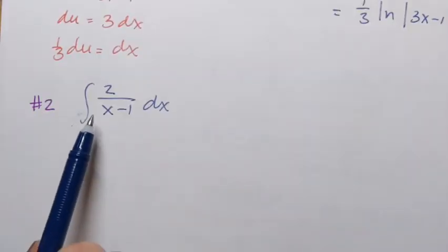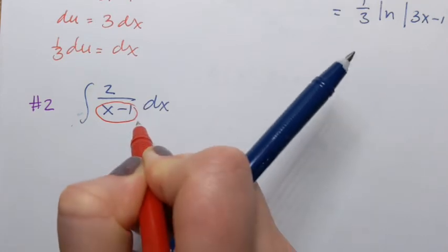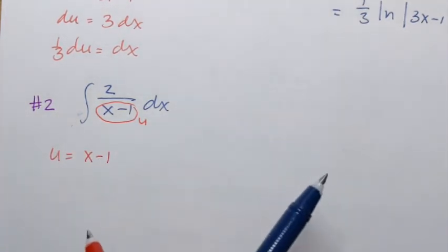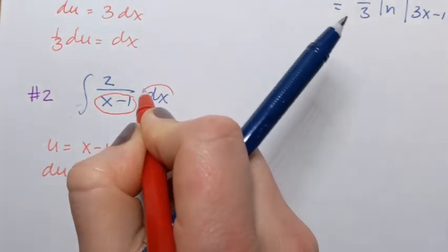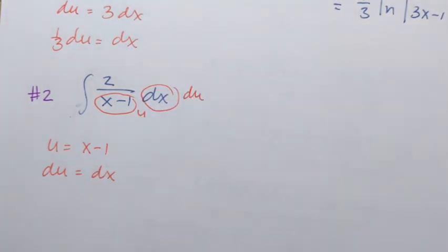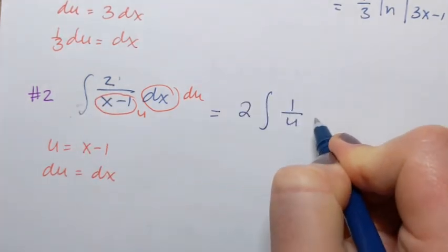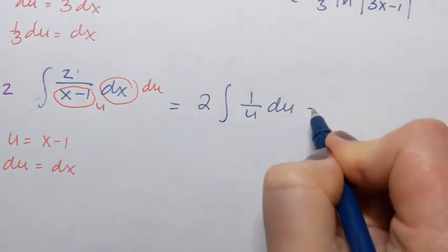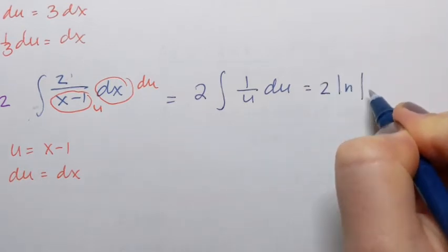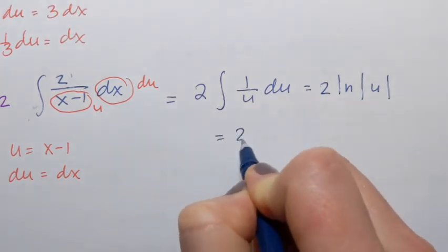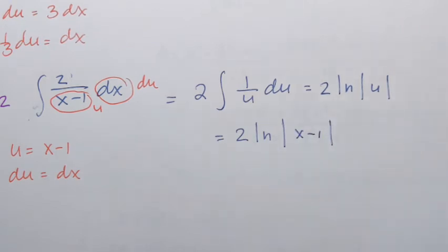For Part 2, integrate 2 over (x minus 1) dx. Let u equal x minus 1, then du equals dx. The integral becomes 2 times the integral of 1/u du, which equals 2 ln|x minus 1|.